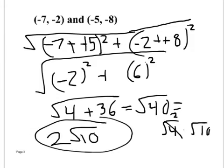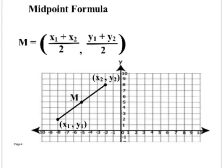Now let's look at the midpoint formula. This tells you the coordinate of the point exactly in the middle between two points. To find the x-coordinate of the midpoint, take x1 plus x2 and divide by two. To find the y-coordinate, take y1 plus y2 and divide by two.